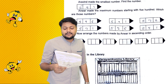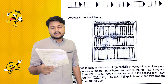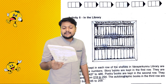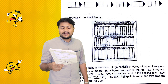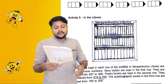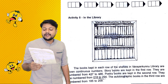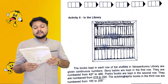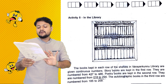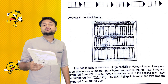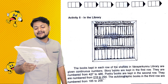Library. The books kept in each row of the shelves in the library are given continuous numbers. Story books are kept in the first row, numbered from 427 to 486. Poetry books are in the second row. Now, how many story books are there in the shelf?